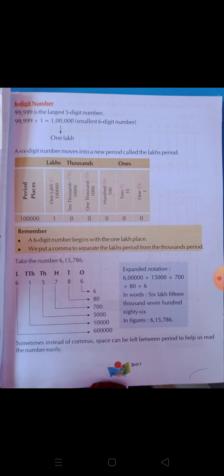It is a 5-digit number. 99,999 is the largest 5-digit number. We have already studied in earlier classes that the greatest 1-digit number is 9, the greatest 2-digit number is 99, the greatest 3-digit number is 999, and the greatest 4-digit number is 9,999. Now we will see the greatest 5-digit number.